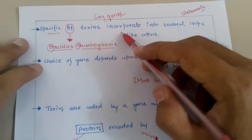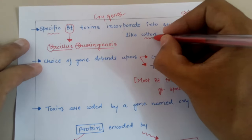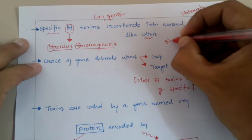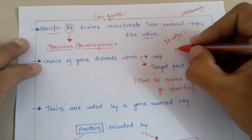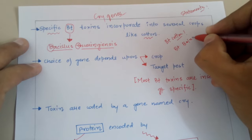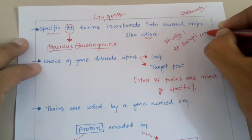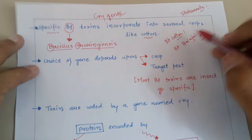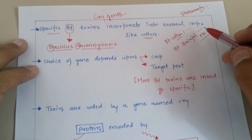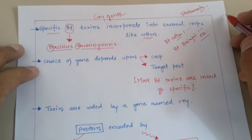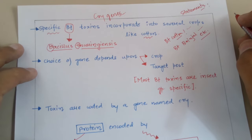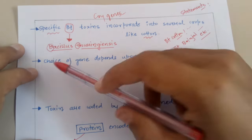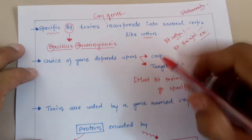Those specific BT toxins enter into crops like cotton, so that particular cotton would be called BT cotton. There are several other crops like BT brinjal in India. BT stands for Bacillus thuringiensis, and these toxins are specific in nature.